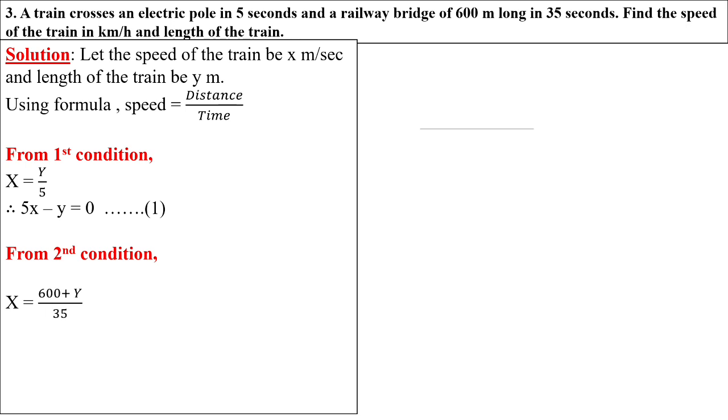From the second condition, the length of the railway bridge is given as 600 meters. Our speed is x, the distance is y plus 600, upon 35, because the train takes 35 seconds to cross that bridge. Now 35 will multiply on the left side: 35x equals 600 plus y. Converting into standard form, 35x minus y equals 600. That is our equation number two.